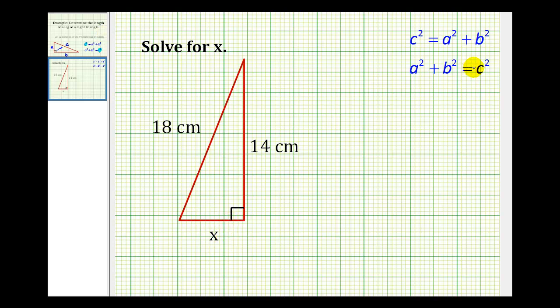For this example, let's use the second equation for the Pythagorean Theorem. The hypotenuse has to be c, that's the side which has a length of 18 centimeters. Let's label this leg a, and we'll label this leg b.